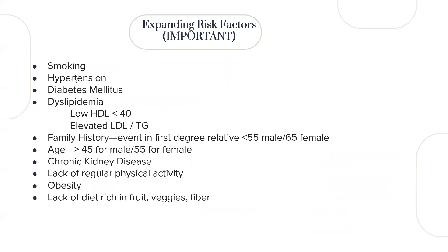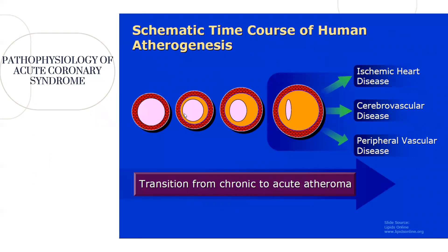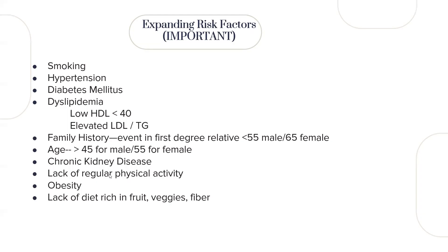Risk factors are very important. Non-modifiable risk factors include family history and age. Modifiable risk factors include smoking, hypertension, diabetes mellitus, and dyslipidemia. You can work on diabetes mellitus, dyslipidemia, and hypertension by adhering to medications, keeping blood sugar low, and keeping blood pressure low. Not adhering to medications and maintaining high blood sugar or blood pressure will make the case worse.